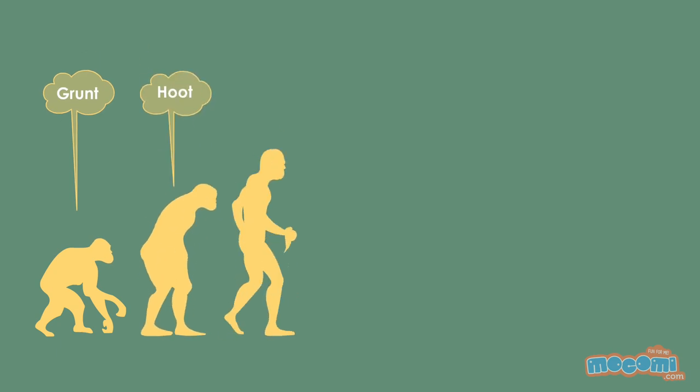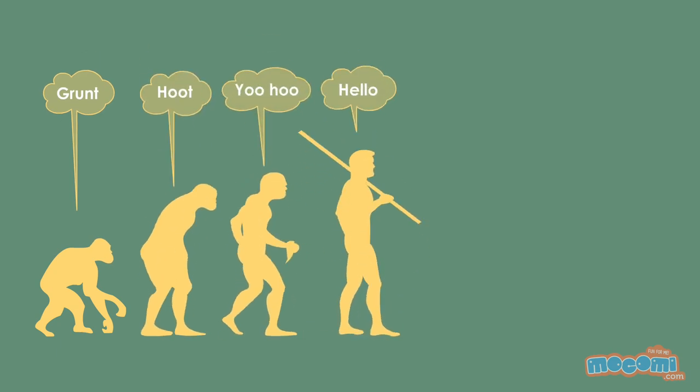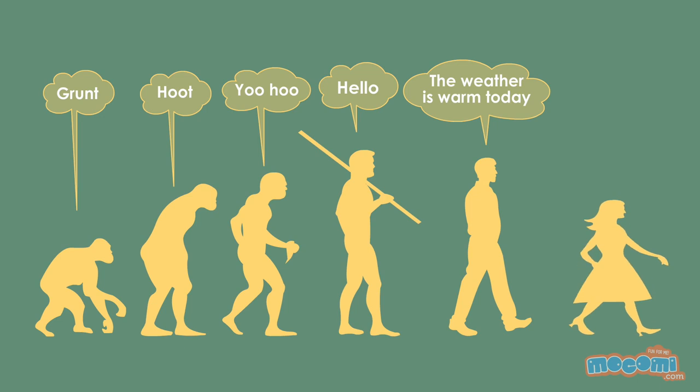One theory is that hominids, our human ancestors, started grunting, hooting and crying out. And this gradually developed into the language we use today.